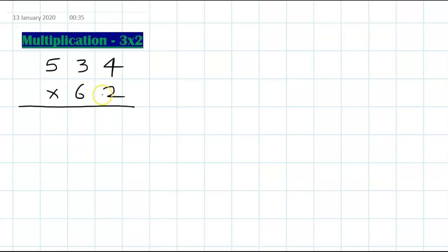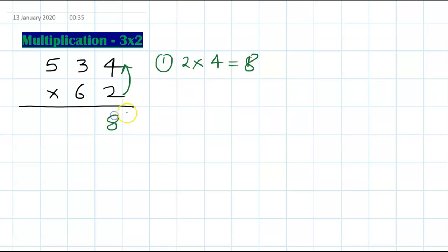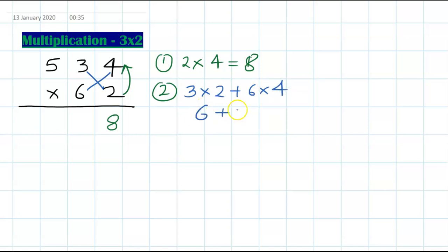Let's try another example: 534 times 62. Step 1: 2 times 4 is 8, write 8. Step 2: cross — 3 times 2 plus 6 times 4 = 6 plus 24 = 30. No carry, so write 0 and carry 3 forward.